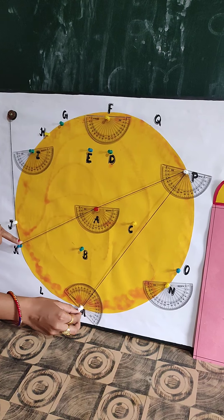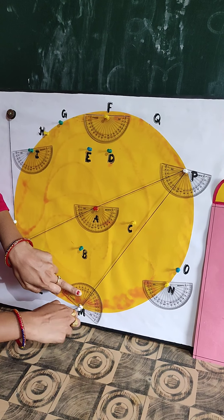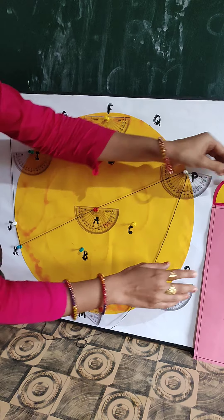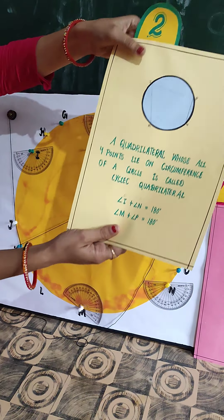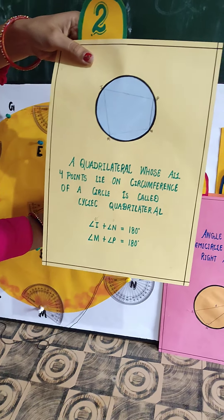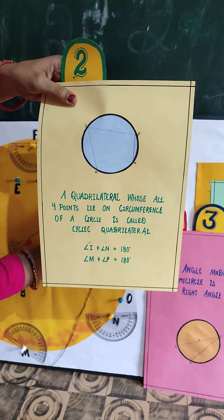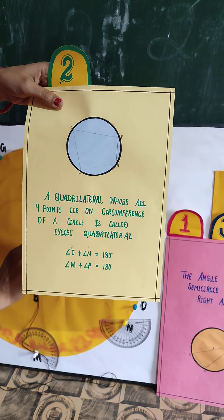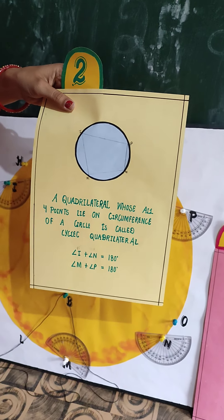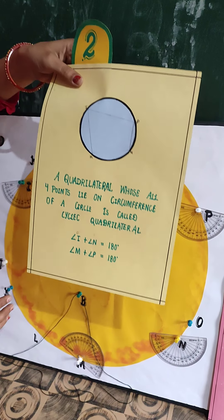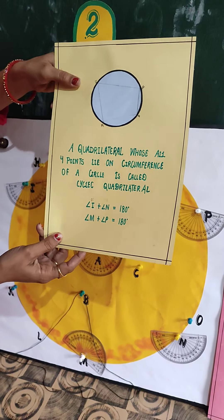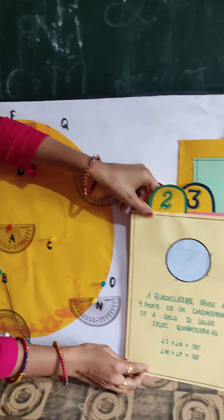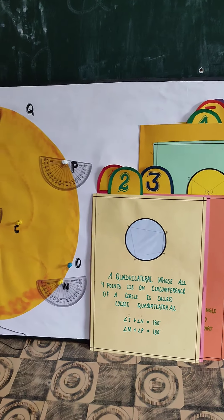Now let's try to prove the next theorem also by using this model. The next theorem is: a quadrilateral whose all four points lie on the circumference of a circle is a cyclic quadrilateral, and the sum of opposite angles of a cyclic quadrilateral is 180 degrees.